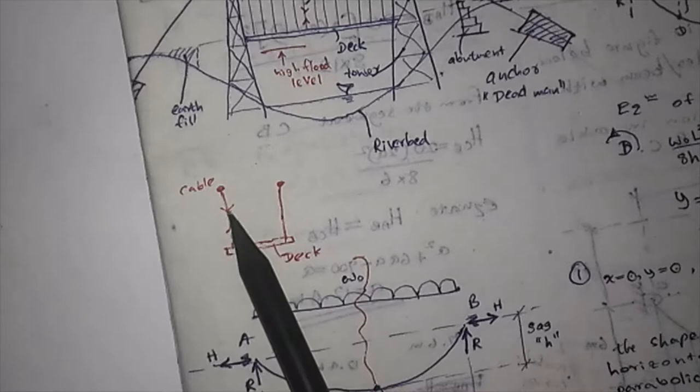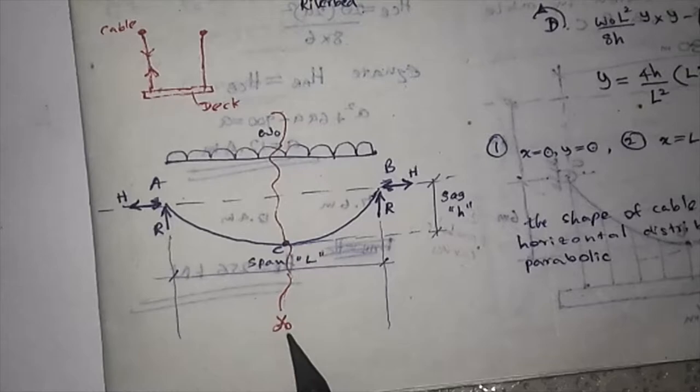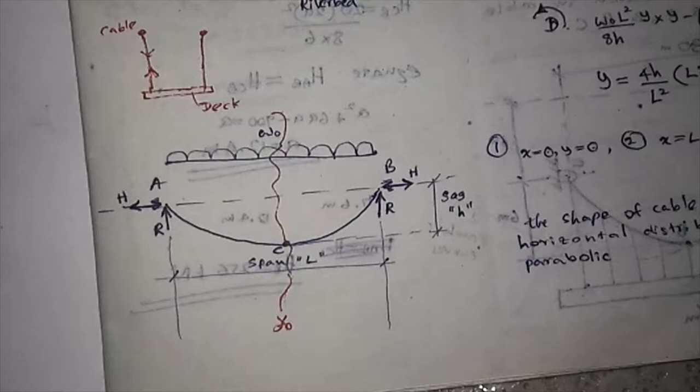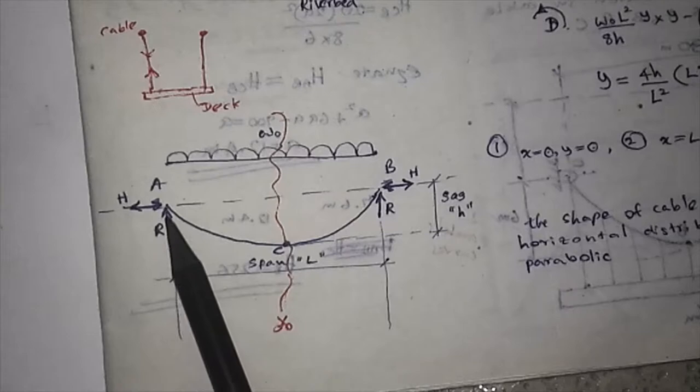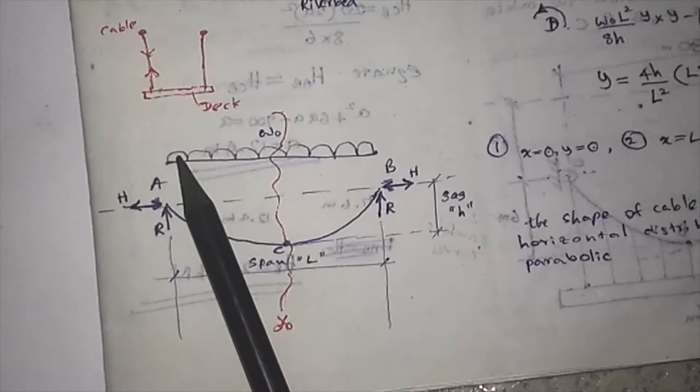When solving this problem, you can cut it into two parts because of the symmetricity. Take one single portion. You can have this cable with horizontal and vertical reactions at point A, span is L. When you consider the half portion, it's L over 2. You have this UDL, W naught. Here also you have the same reaction.